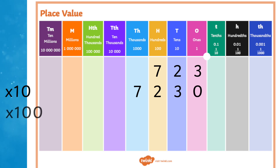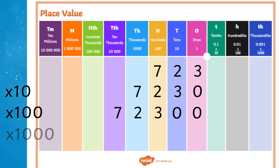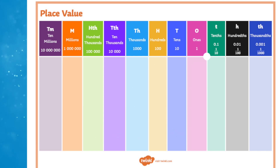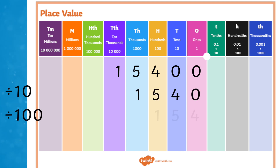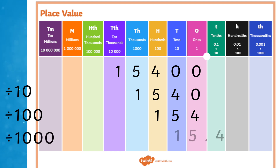When multiplying by 100, the numbers move two places to the left, and by 1000, three places to the left. When dividing, our number is getting smaller, and so dividing by 10 moves our number one place to the right, dividing by 100 moves it two places right, and by 1000 moves it three places to the right.